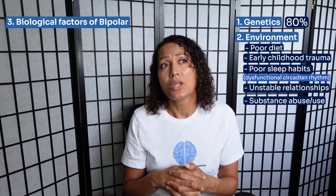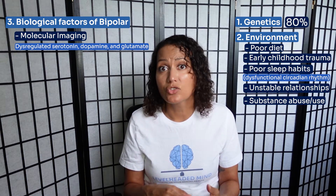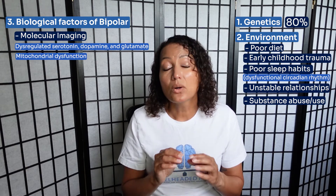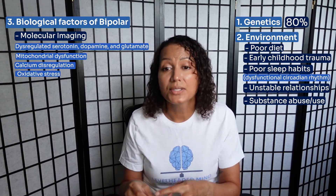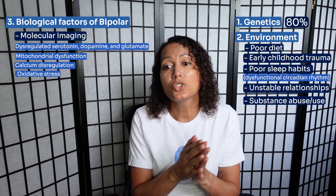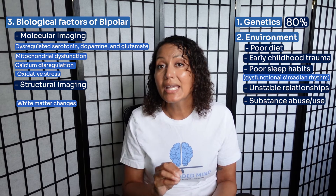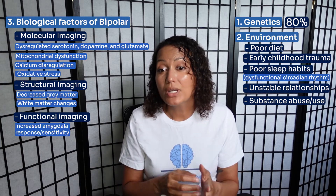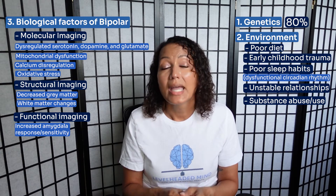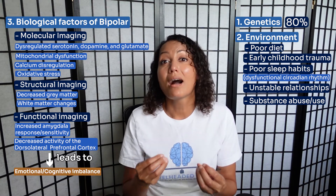There are also biological factors noted in bipolar disorder. Molecular imaging has demonstrated dysregulation in neurotransmitters such as serotonin, dopamine, and glutamate. Mitochondrial dysfunction has also been noted, which can lead to calcium dysregulation, oxidative stress, and hyperexcitability of neurons. Neuroimaging has shown a decrease in gray matter and white matter abnormalities. Functional imaging has demonstrated an increased amygdala response and decreased activity of the dorsolateral prefrontal cortex, leading to emotional and cognitive imbalance.